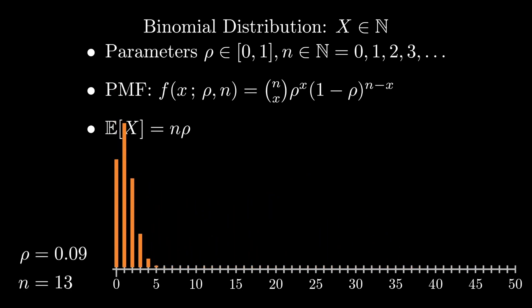The multinomial distribution generalizes the binomial when the underlying random variables take more than two values.